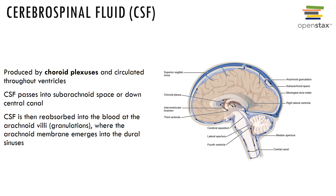There are four ventricles of the brain: two lateral ventricles, a right and a left, each within one of the cerebral hemispheres; the third ventricle located in the diencephalon; and the fourth ventricle, which begins in the metencephalon and extends into the superior portion of the medulla oblongata, then narrows and is continuous with the central canal of the spinal cord. CSF is reabsorbed into the blood where the arachnoid membrane emerges into the dural sinuses.